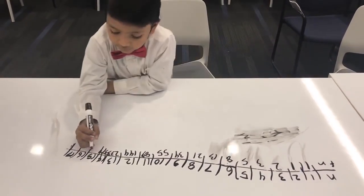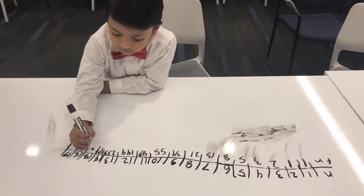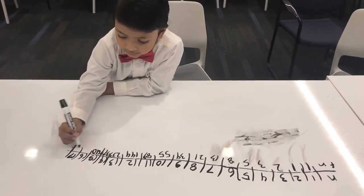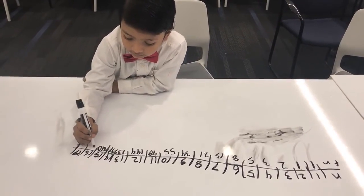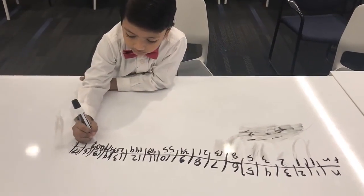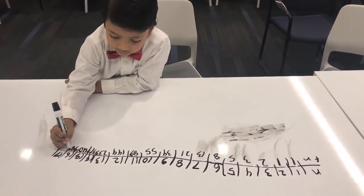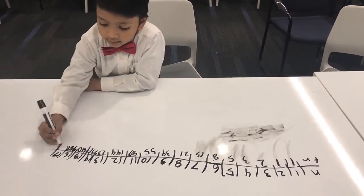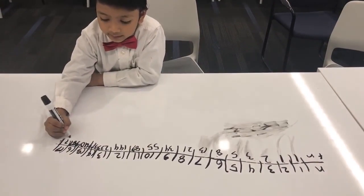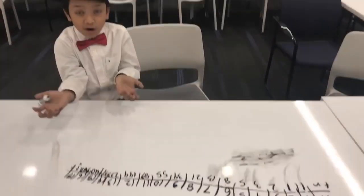F(15) is 610, F(16) is 987, and the 17th is — we don't know.